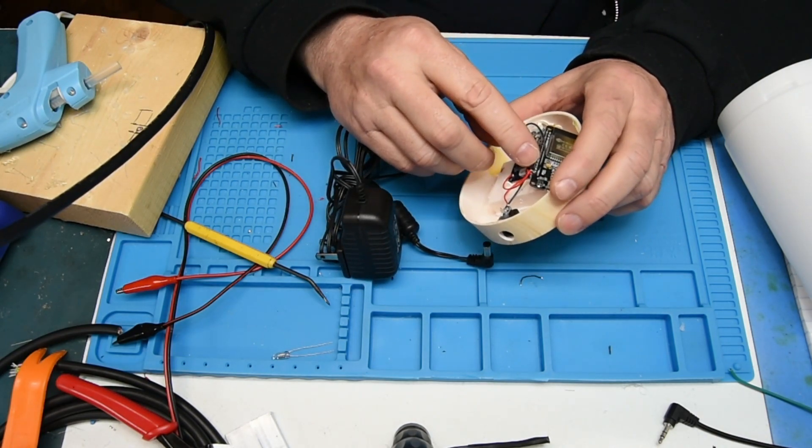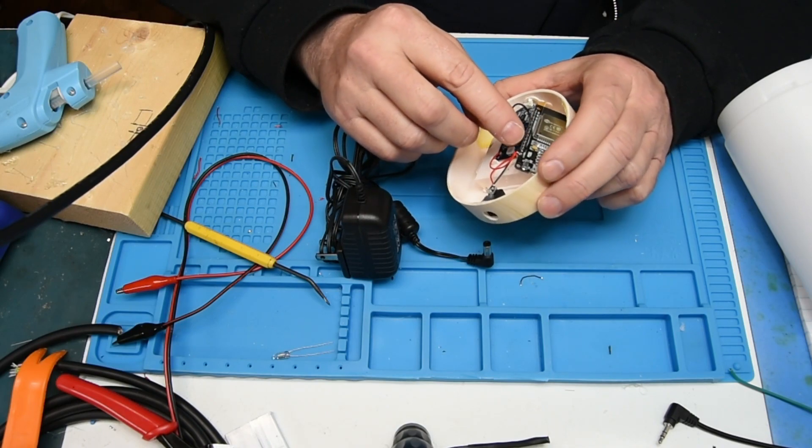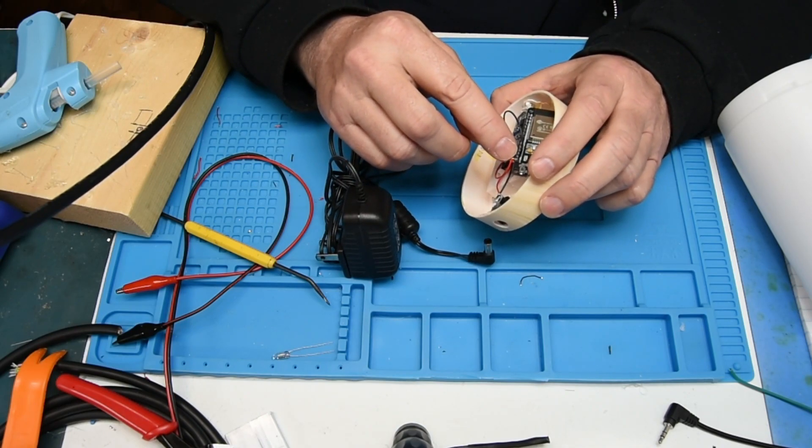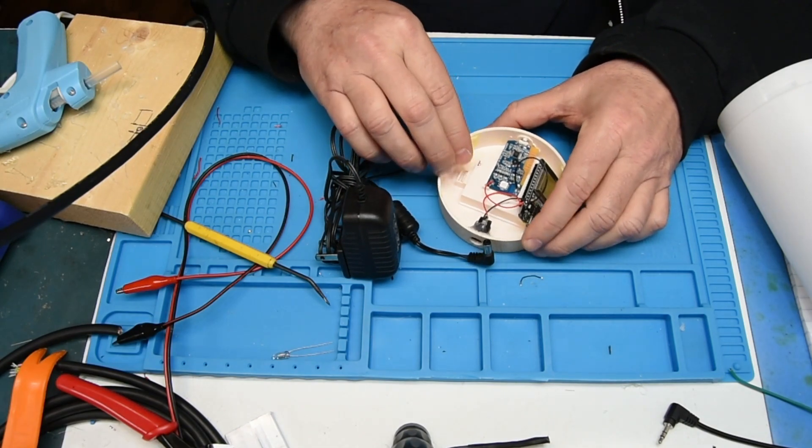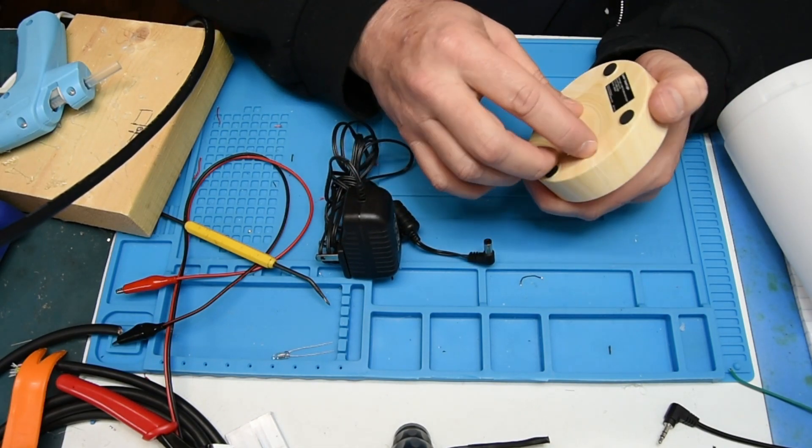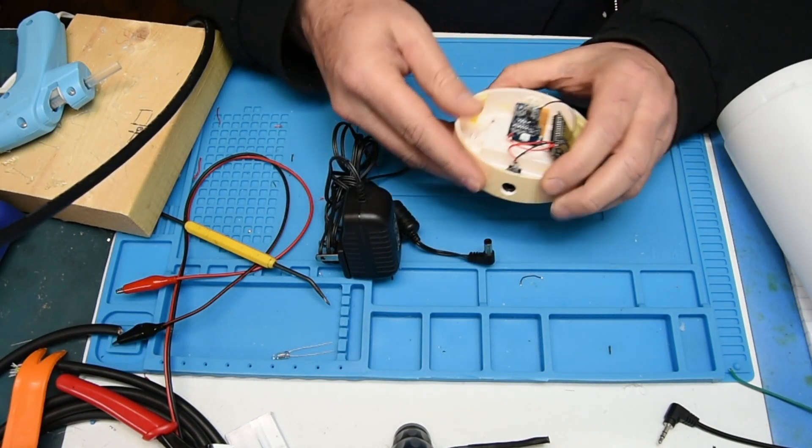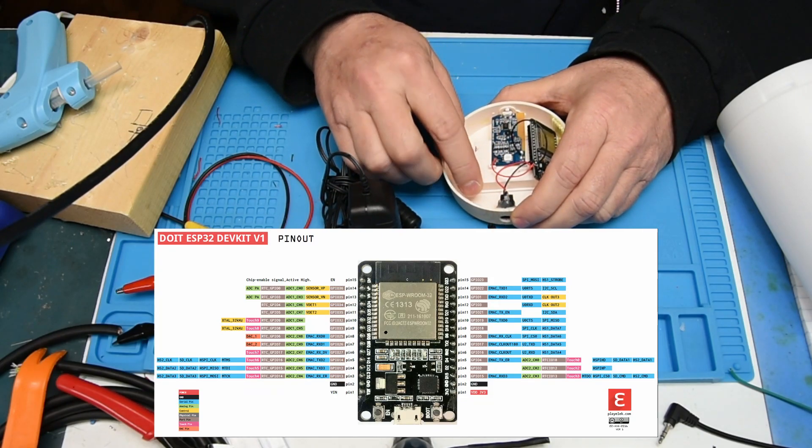You can actually send five volts to the ESP32 on the dev board on the VN and the ground connectors. So I took out the batteries obviously and put the socket in.